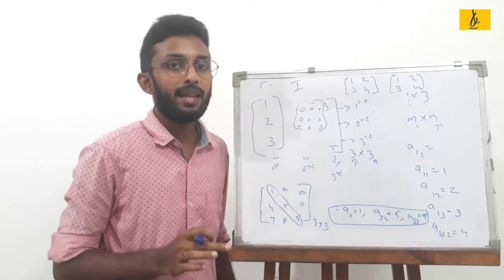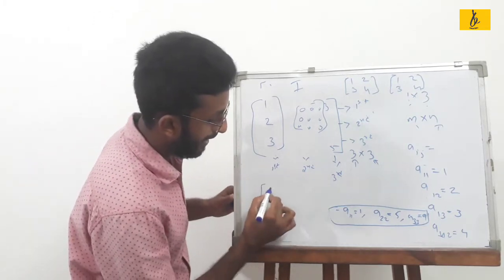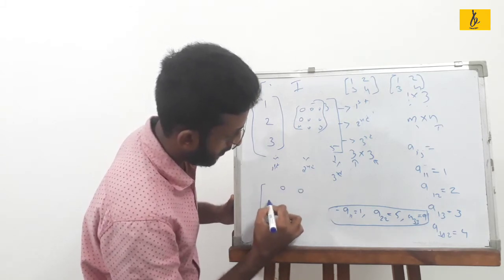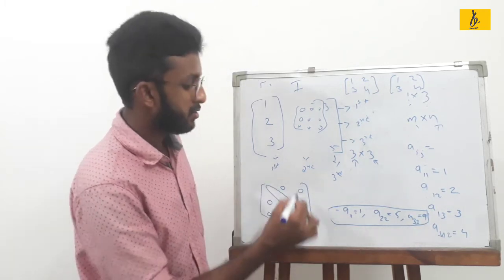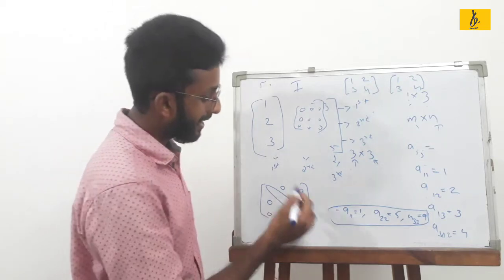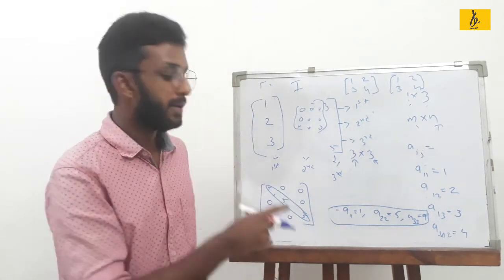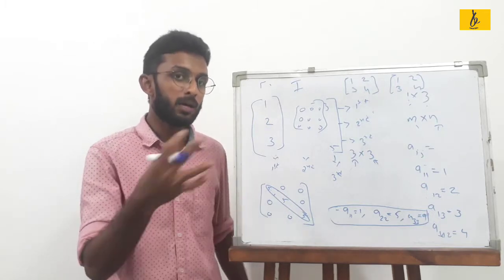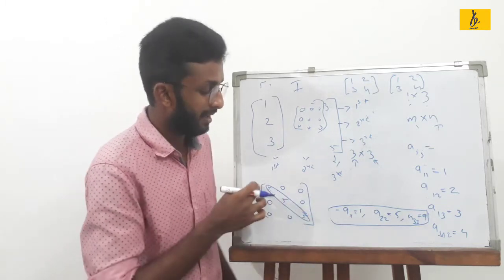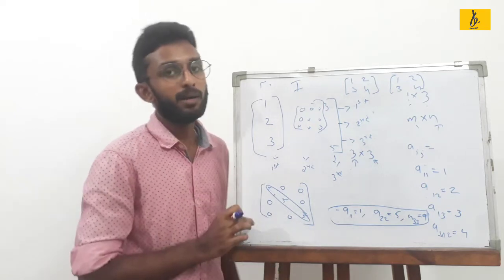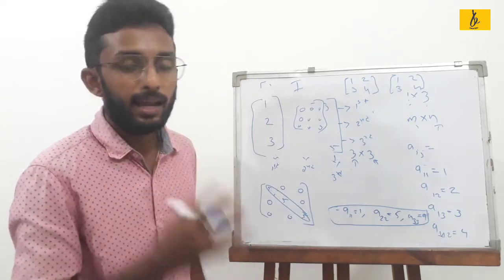Next is the scalar matrix. The scalar matrix is a type of diagonal matrix where all diagonal elements are the same and all non-diagonal elements are 0. This is the scalar matrix pattern.